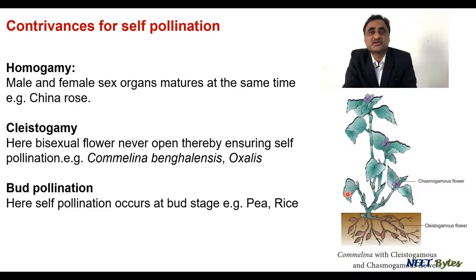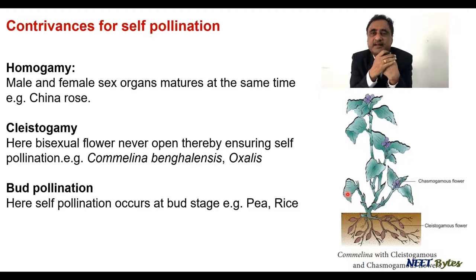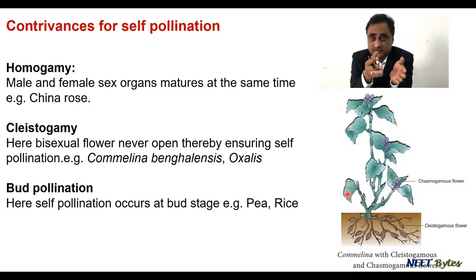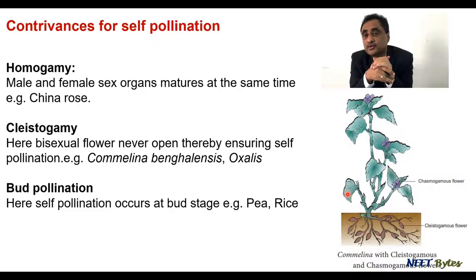There is one more example — bud pollination, typically found in Pisum sativum, the pea plant. When it is in bud condition, fertilization occurs, so the moment the flower opens, fertilization has already happened. This system also ensures self-pollination, and this was the unique event that helped Mendel in doing his entire genetics experiment. These are the contrivances which help in the process of either self-pollination or cross-pollination.